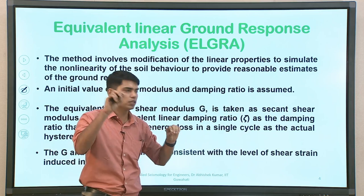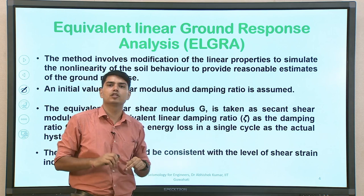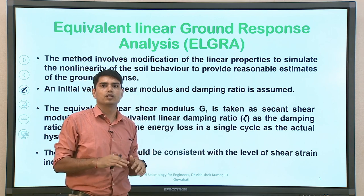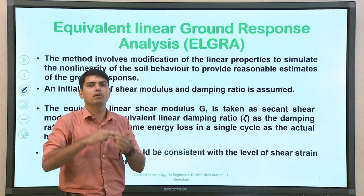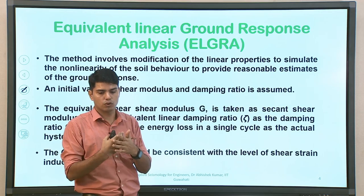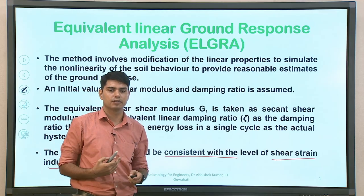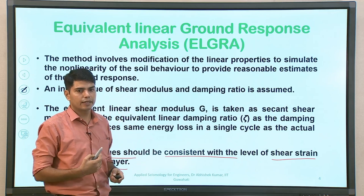In the iterative process of equivalent linear analysis, the initial assumed shear strain should be consistent with the shear strain mobilized in the particular soil layer at the end of each iteration. If it is not consistent, go for subsequent iterations, modifying the value of shear modulus and damping ratio. The equivalent linear shear modulus is defined as secant modulus, and the equivalent linear damping ratio produces the same energy loss in a single cycle as in actual loading. The hysteresis loop defines the nature of soil behavior under cyclic loading and repeated loading-unloading.